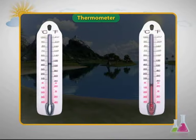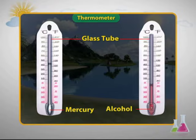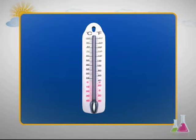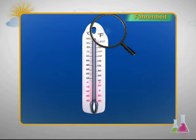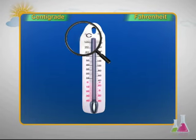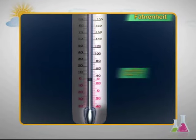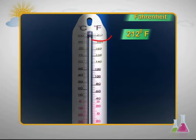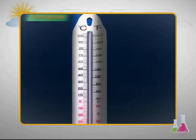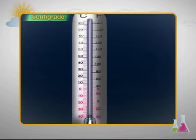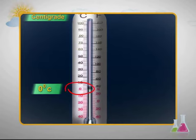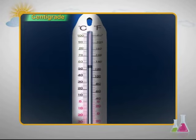The instrument used to measure temperature is called a thermometer. It consists of a narrow glass tube filled with mercury or alcohol. Temperature is measured in two scales: the Fahrenheit scale and the centigrade scale. On the Fahrenheit scale, the freezing point of water is 32°F and the boiling point is 212°F. On the centigrade or Celsius scale, the freezing point is 0°C and the boiling point is 100°C.